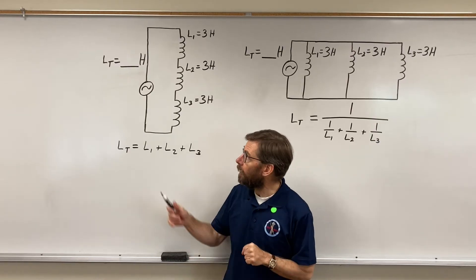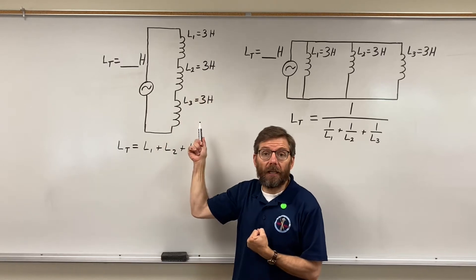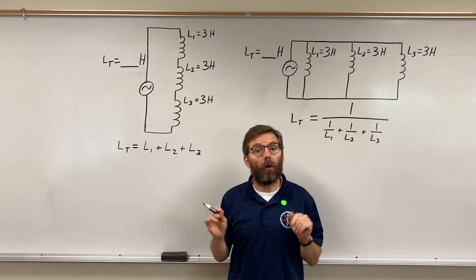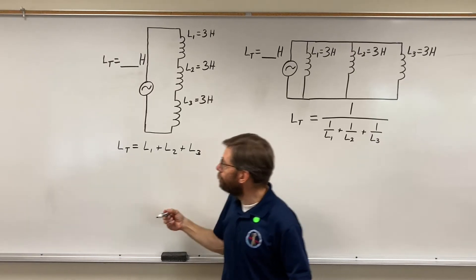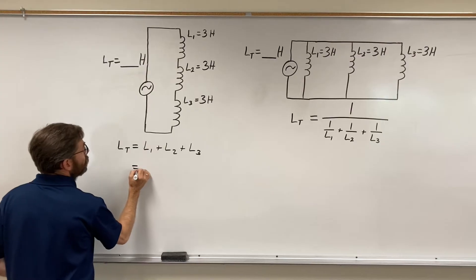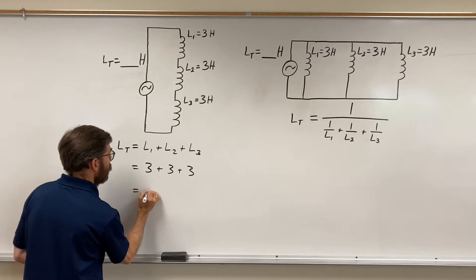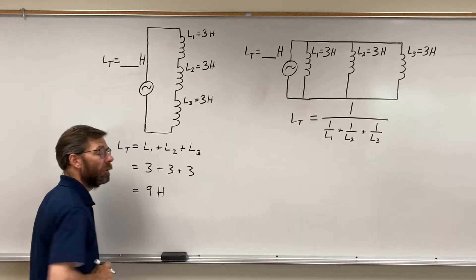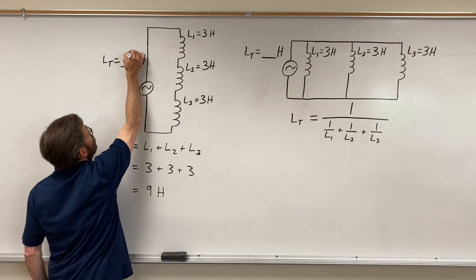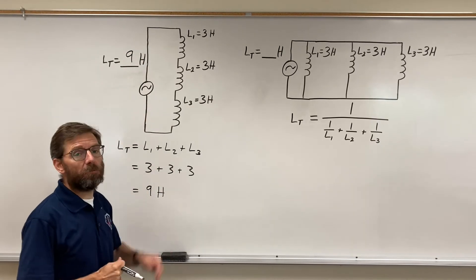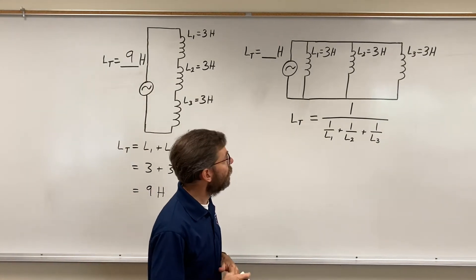We'll go through that momentarily. What changes over here? You'll notice I've also changed the numbers slightly just to make a clear point. Three inductors in a row: three plus three plus three equals nine Henry's.